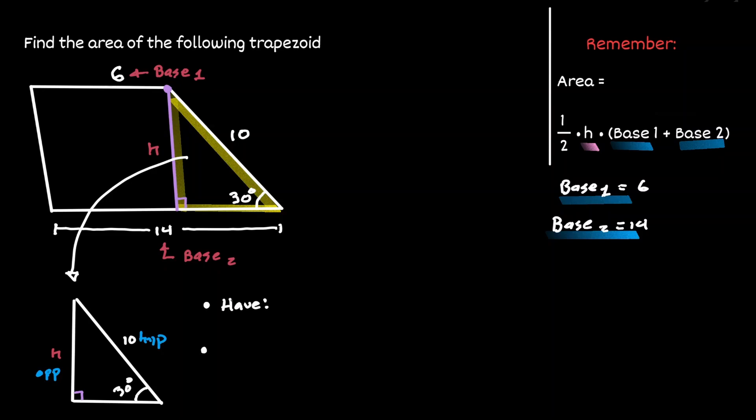We have the length of the hypotenuse and we want the length of the opposite. Then we will use the sine function because it is defined with the length of what we have and what we want.